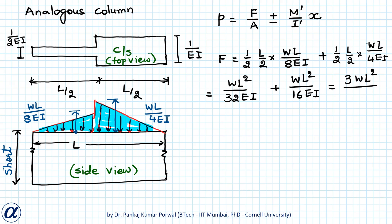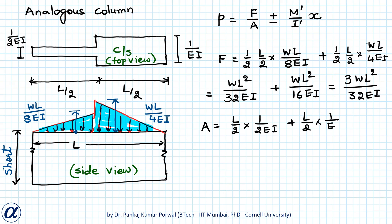Next, the area of the cross-section of the analogous column is (L/2) · 1/(2EI) + (L/2) · 1/(EI), which equals 3L/(4EI).